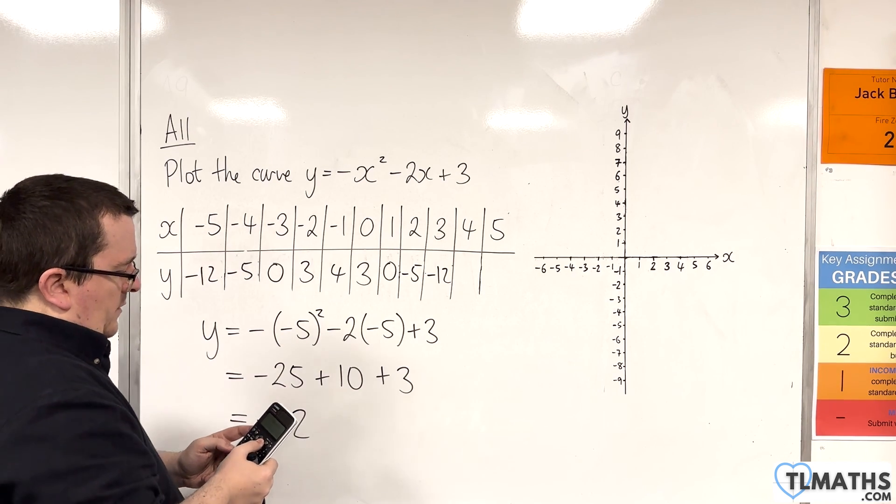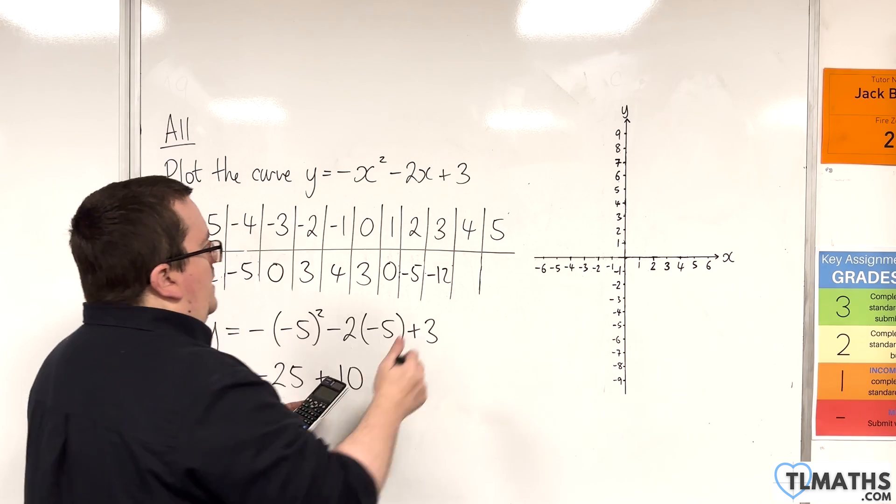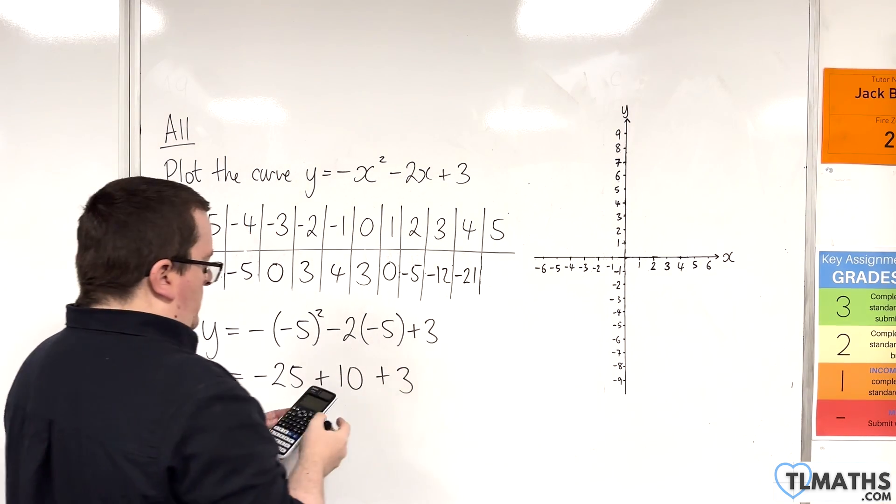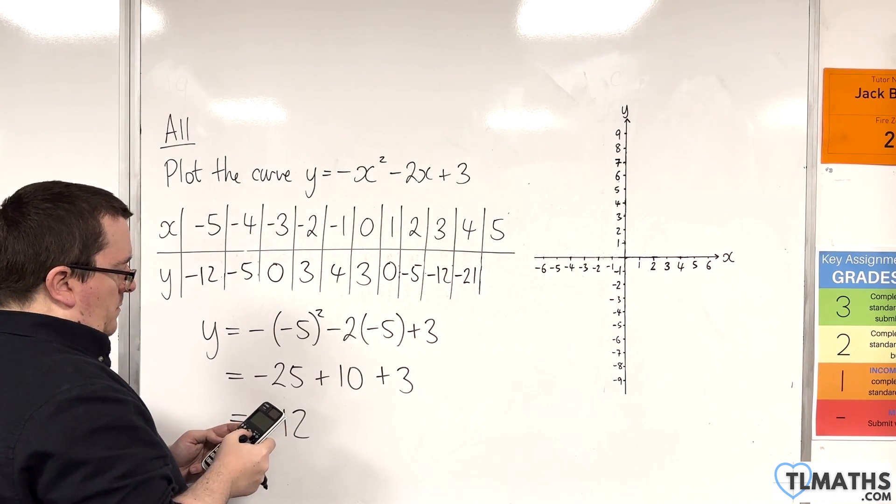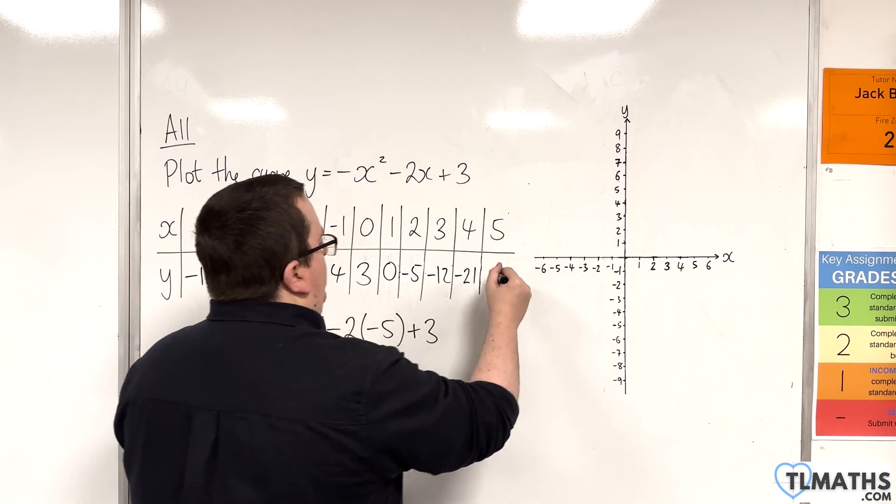When x is 4, I get minus 21. And when x is 5, I get minus 32.